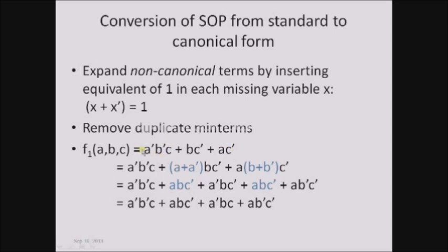Let us take the example: a-complement b-complement c plus bc-complement plus ac-complement. The first term includes all the input variables. For the second term, it contains only two variables, b and c, but variable a is missing. So we have to insert the equivalent of one in each missing variable, that is x plus x-complement. Here x is substituted with a, so we write a plus a-complement into bc-complement. In the same way, b plus b-complement for the third term. Now expanding: a-complement b-complement c plus abc-complement plus a-complement bc-complement.